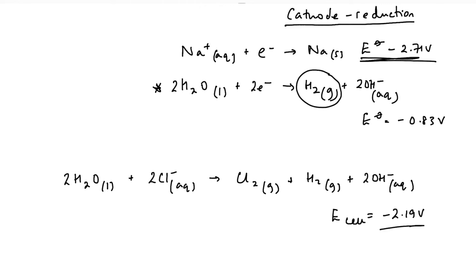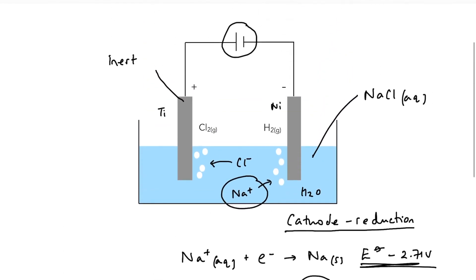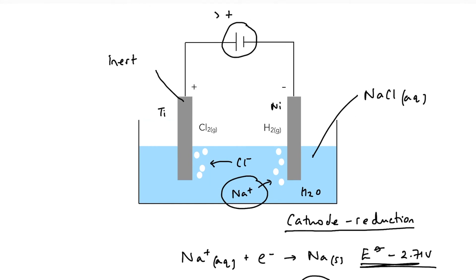So in order to make this process happen, I would need an electrical supply or battery that was producing more than 2.19 volts, because we're driving this reaction against its spontaneous nature.